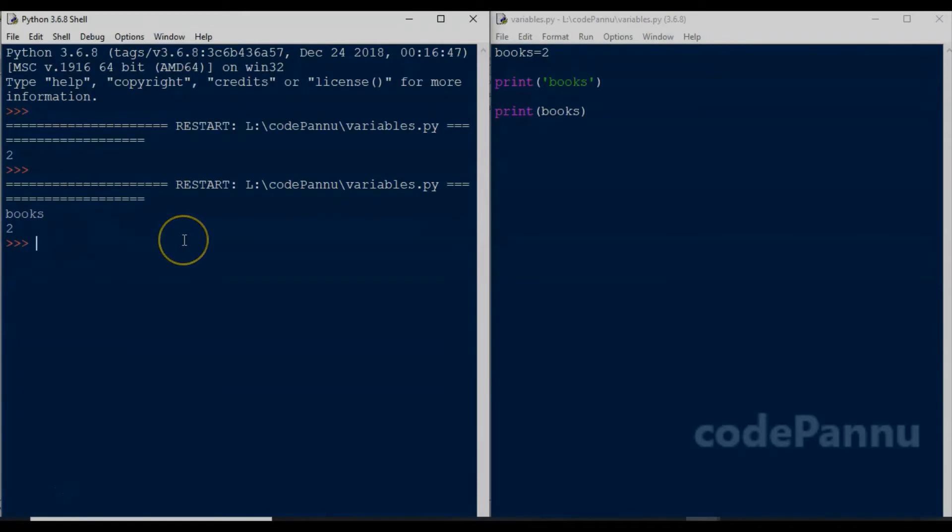Remember, we learnt in our print video that anything you type within the single quotes will be printed exactly on the screen. So when you add the single quotes, Python will think that you want to print the word books.